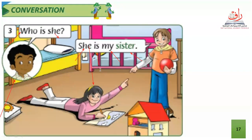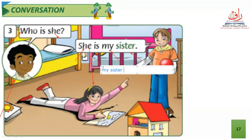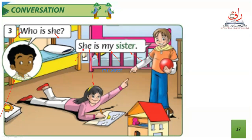Let's write 'my sister'. Where is this place? Which room? This is a kitchen, or the living room, or the bedroom? It's a bedroom. We have two beds here — a yellow bed and a pink bed. This is for the girl. Let's read all together: Who is she? She is my sister. She is my sister.